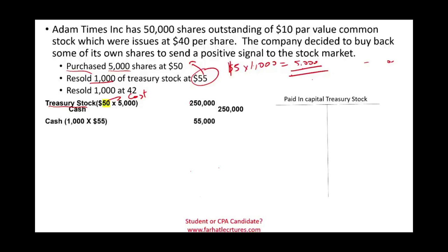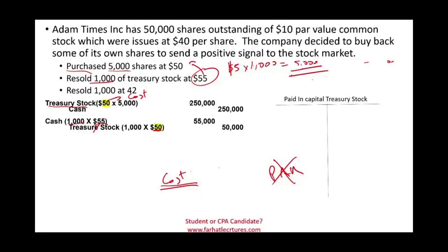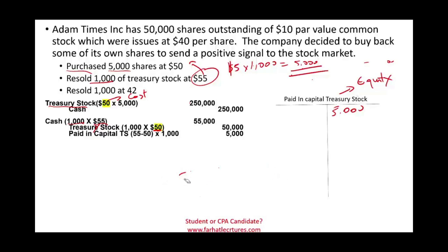Start with cash: we received $55,000 (1,000 times $55). Next, remove the treasury stock at cost using the cost method — there's also a par value method, but we're using the cost method. We remove 1,000 shares at $50 cost, which is $50,000. The remainder is $5,000, which we credit to an account called paid-in capital treasury stock. This is an equity account, so equity increases. We assumed no prior balance in paid-in capital treasury stock, so now we have a $5,000 balance.